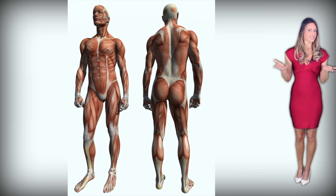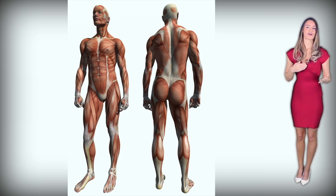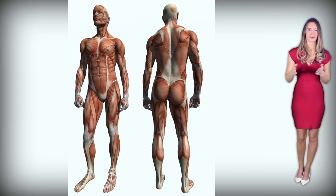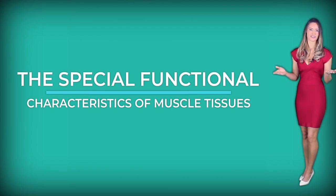Well, that's the gist of it. We are now moving to a more in-depth discussion about the structure and function of our muscles — the special functional characteristics of muscle tissues. Despite the different types, all muscle tissues share functional characteristics that allow them to perform their functions.